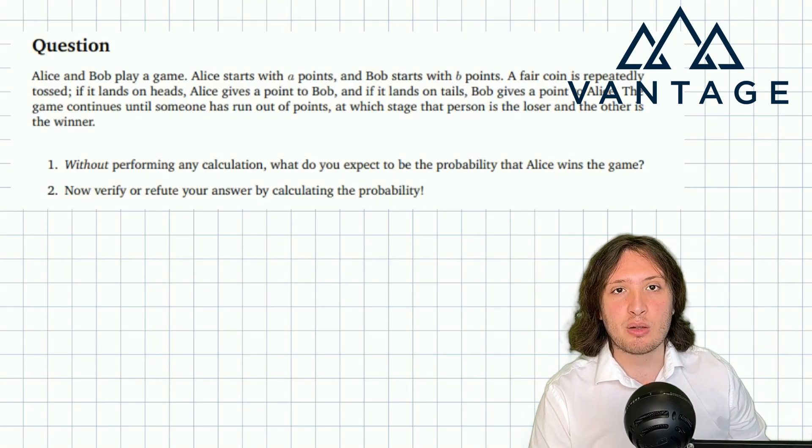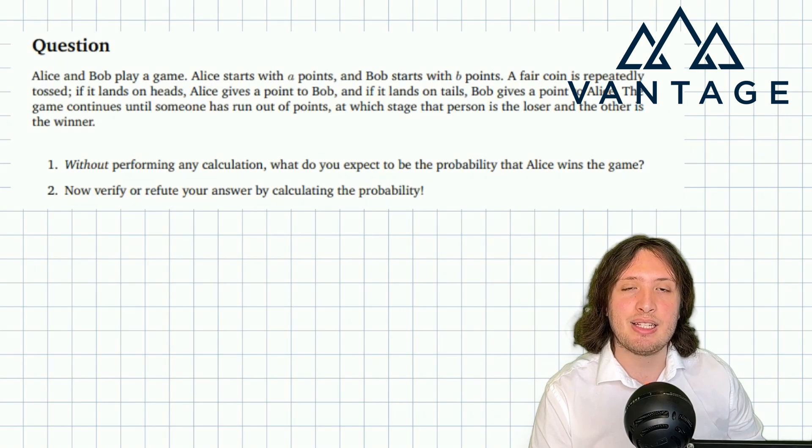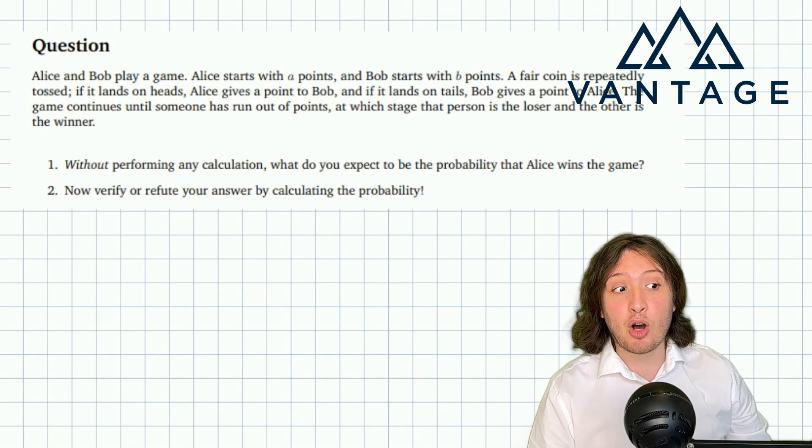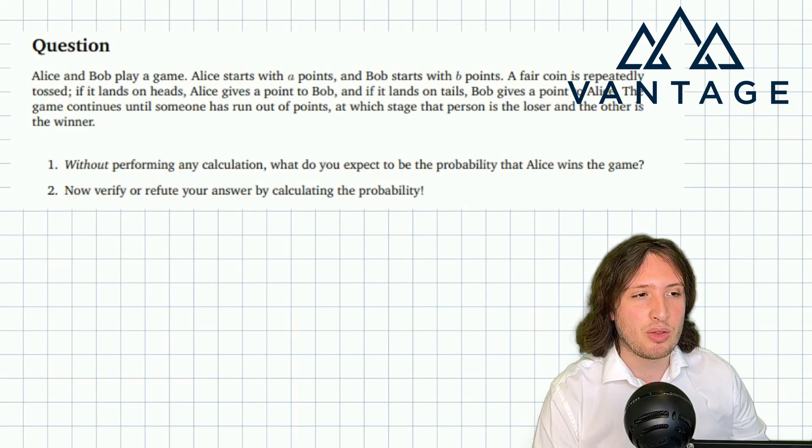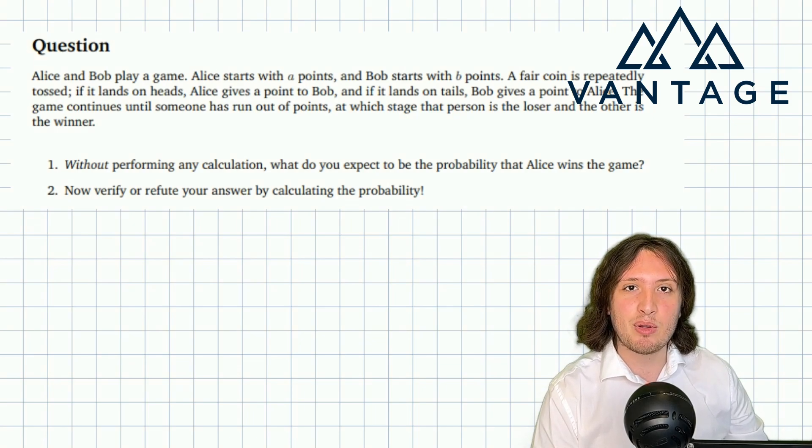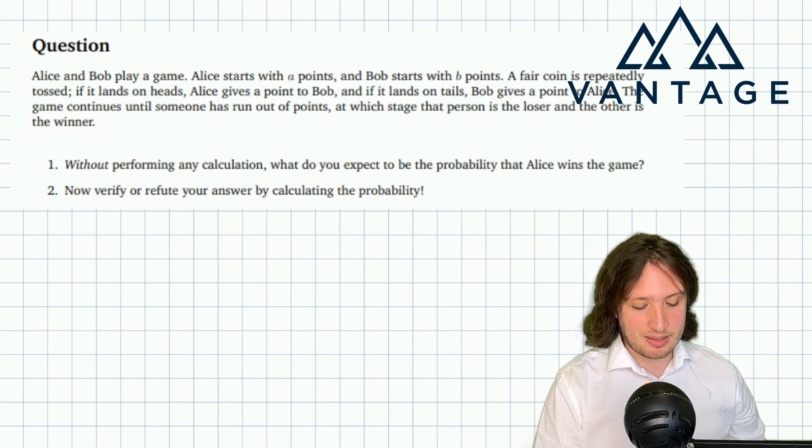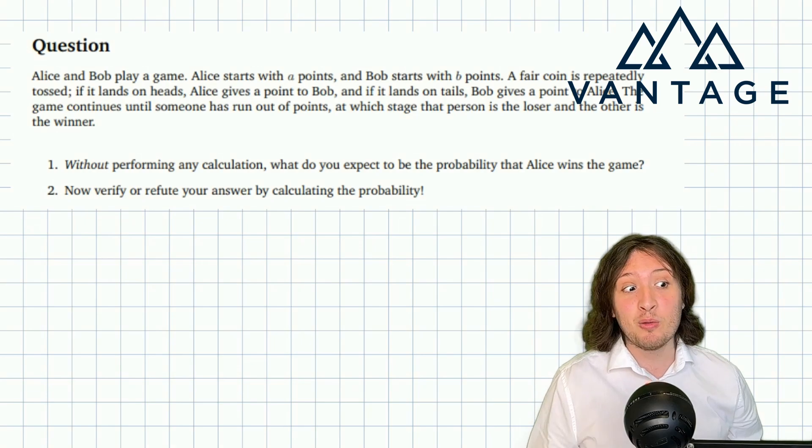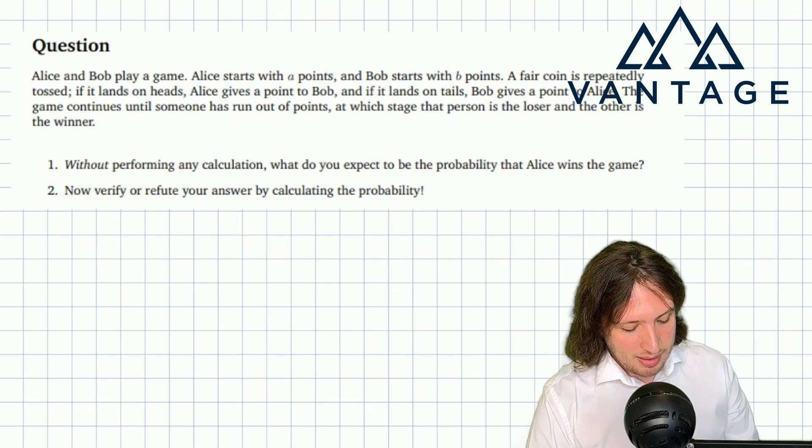In this video we're going to look at a question from our computer science interview question bank 2024. This is a very common probability problem, very well known. It's really a simple case of an idea in probability called gambler's ruin, and we see variations of this question asked across lots of subjects almost every year.